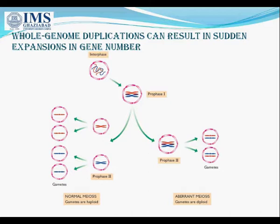Whole genome duplication can result in a sudden expansion in gene number. The most rapid means of increasing gene number is by duplicating the entire genome. This can occur if an error during meiosis leads to the production of gametes that are diploid rather than haploid. If two diploid gametes fuse, the result will be a type of autopolyploid — in this case, a tetraploid cell whose nucleus contains four copies of each chromosome.